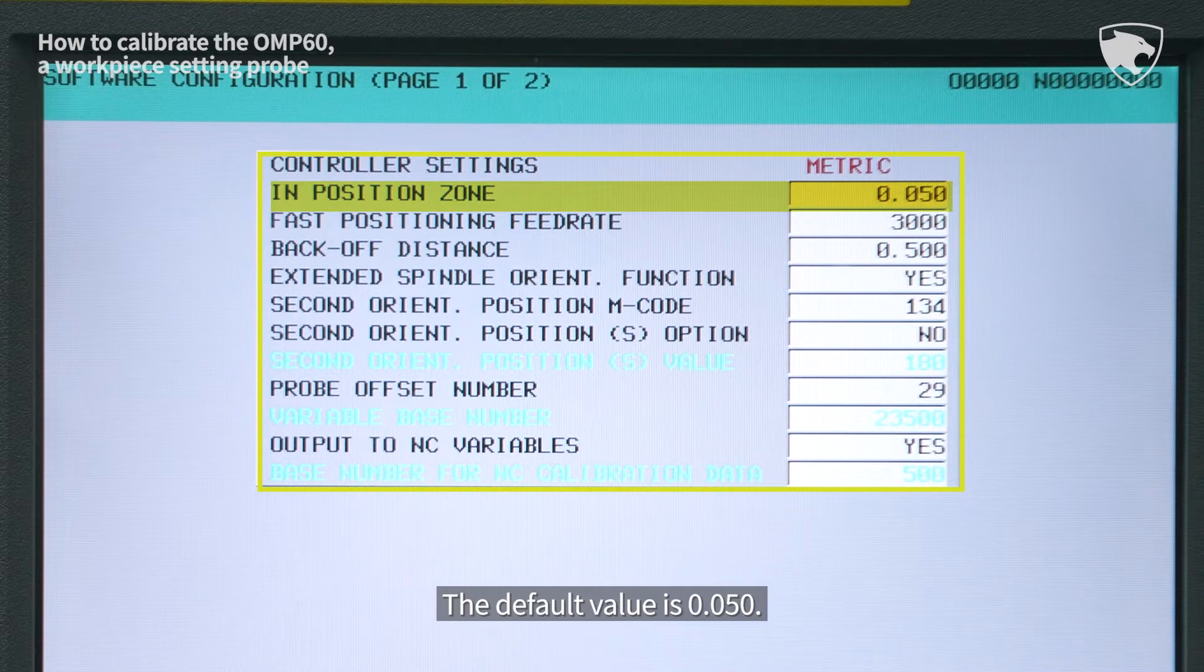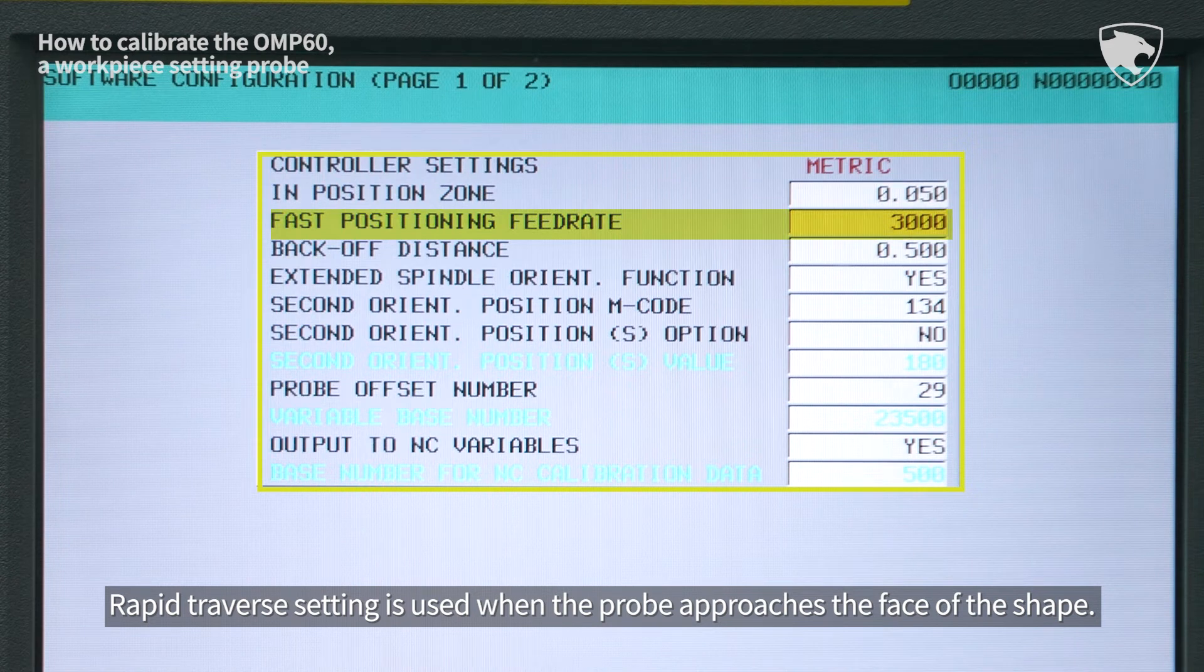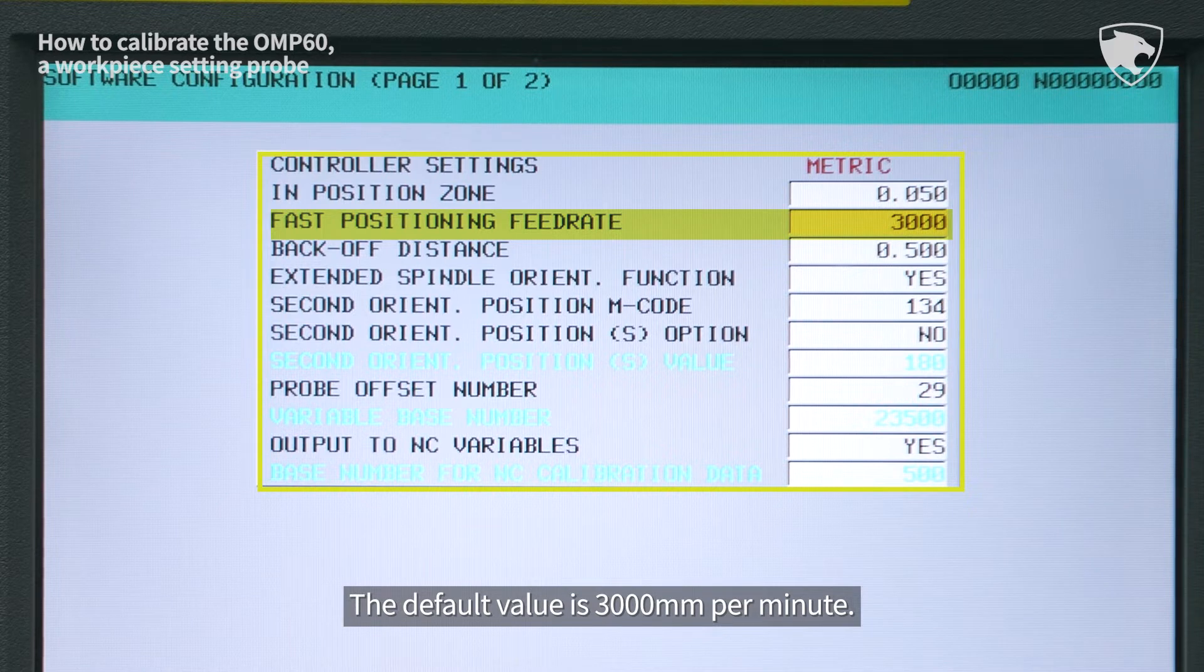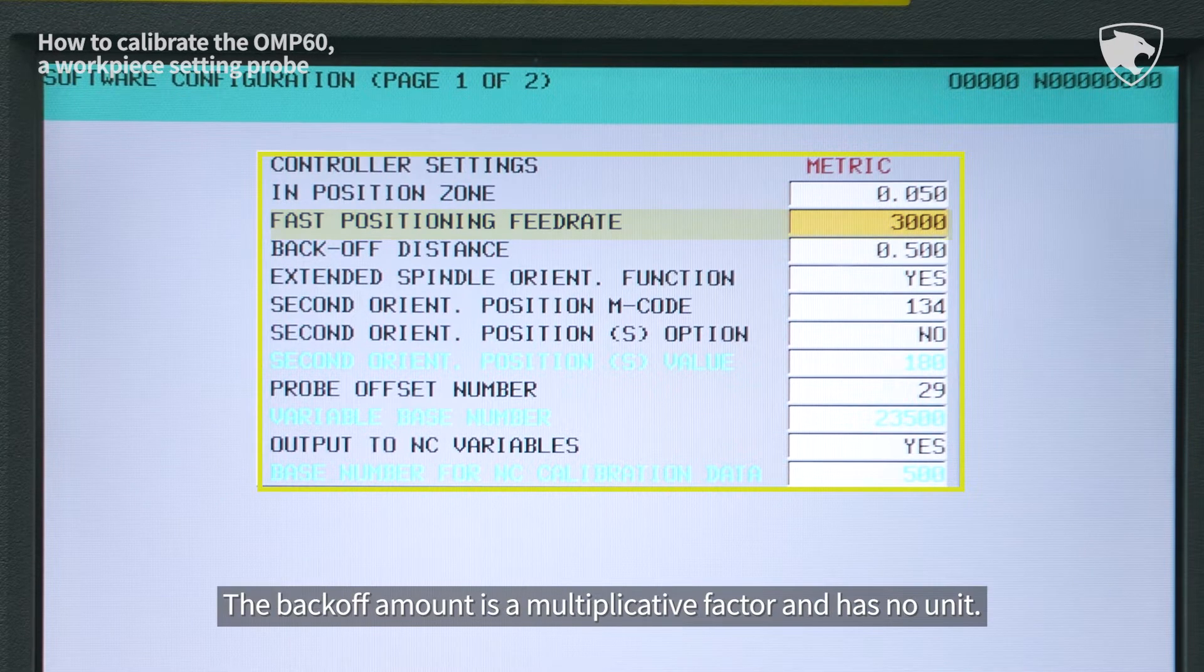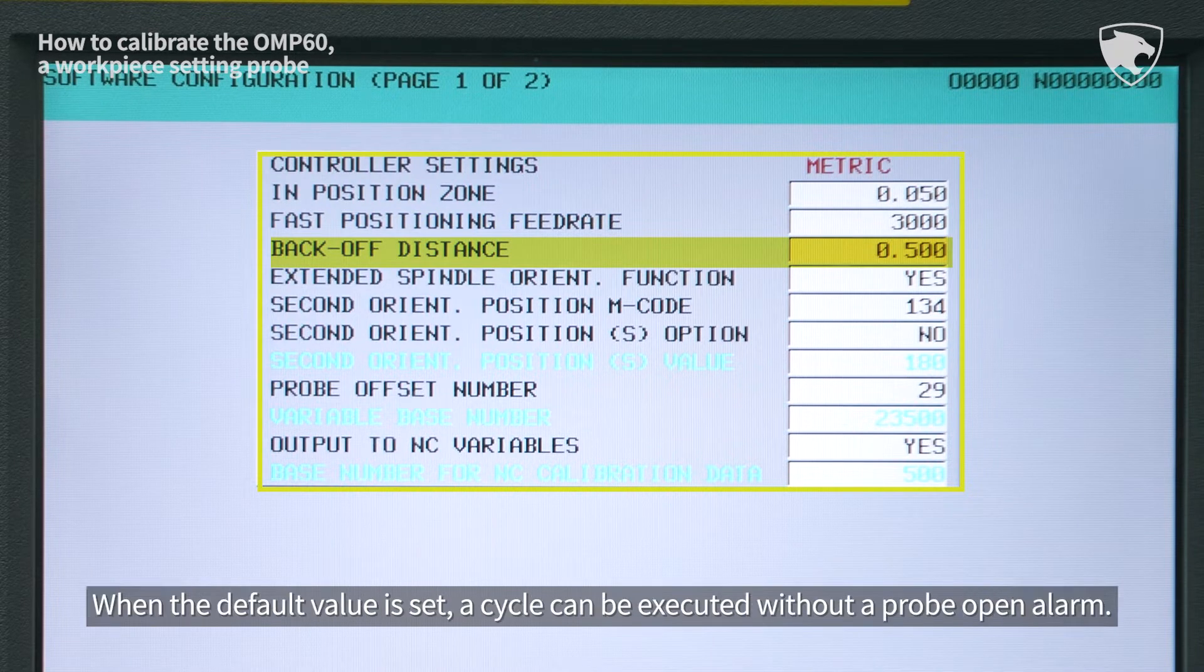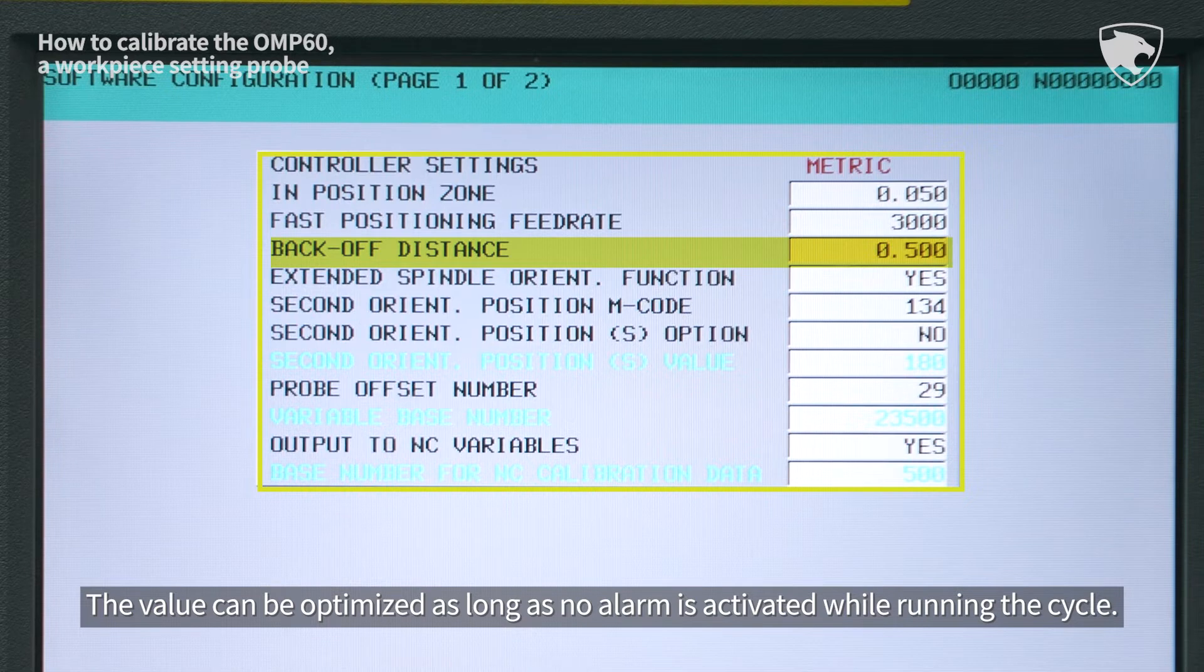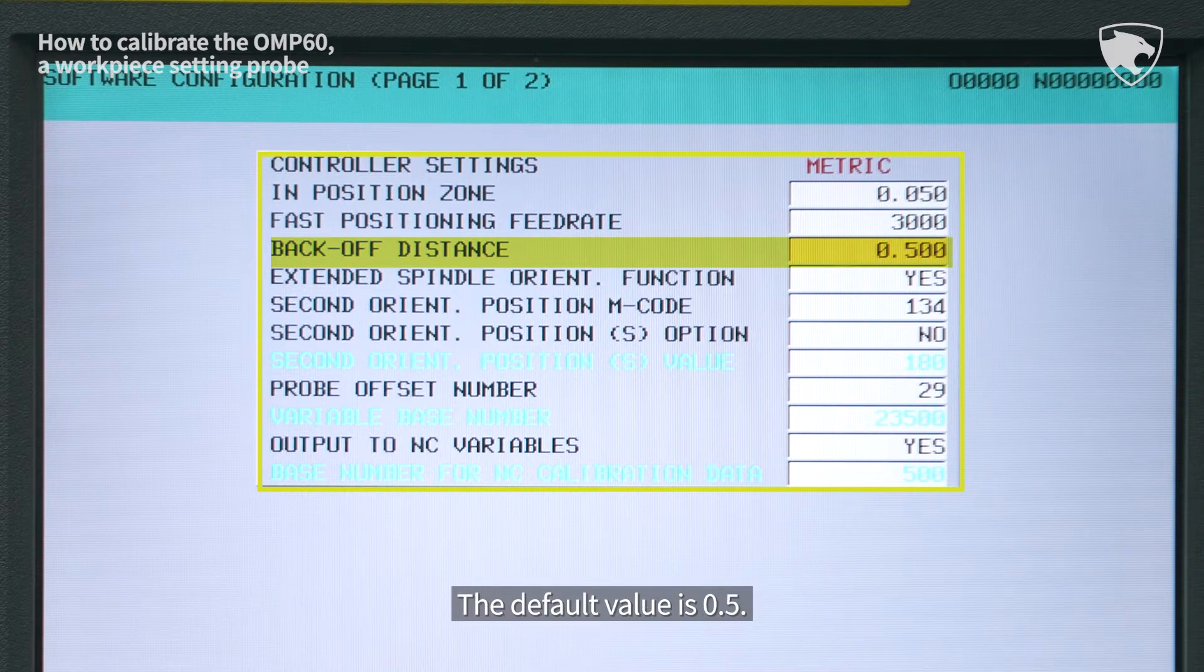The default value is 0.050. Rapid traverse setting is used when the probe approaches the face of the shape. The default value is 3000 mm per minute. The backoff amount is a multiplicative factor and has no unit. When the default value is set, a cycle can be executed without a probe open alarm. The value can be optimized as long as no alarm is activated while running the cycle. The default value is 0.5.